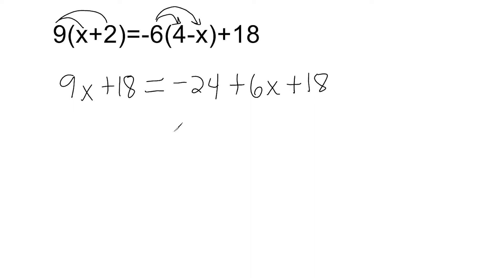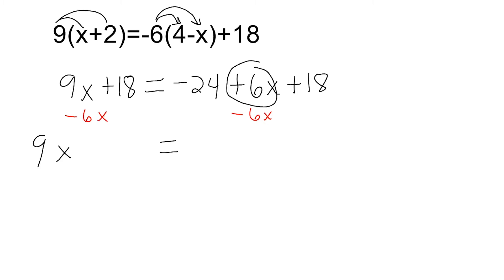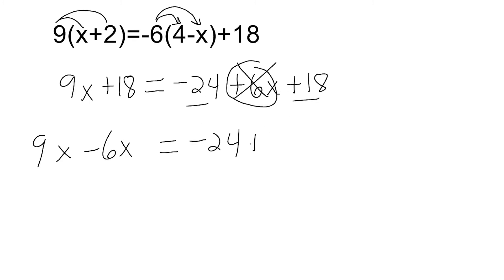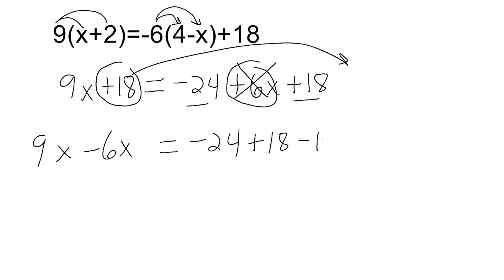So I'm going to write all of my terms with coefficients on the left. We already have 9x on the left, so I leave it there. On the right, we have a positive 6x. You can show your work by writing minus 6x on the right and minus 6x on the left — that would leave you with 3x. What I want you to do is rewrite positive 6x as negative 6x on the other side so we can combine it. Now I'm going to take all of my constants on the right and drop them down: negative 24, positive 18. If you don't jump over the equal sign, you keep them as they are. Then we take this positive 18 from the left and move it to the other side as negative 18.